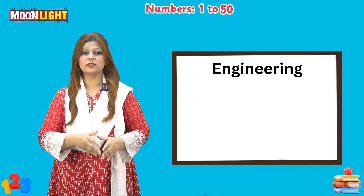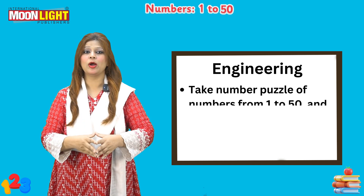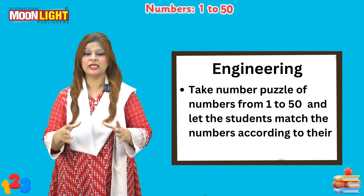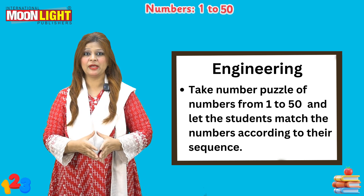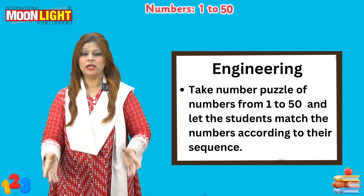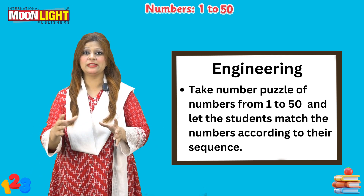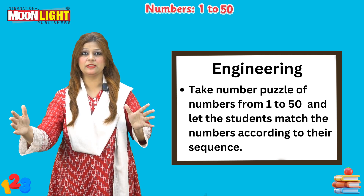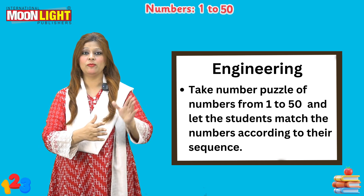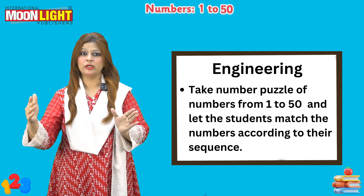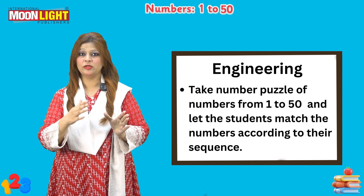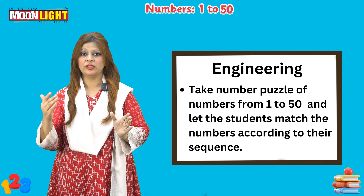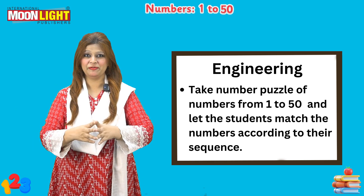For the engineering section, take number puzzles from 1 to 50 and let the students match the numbers according to their sequence. Lay them on the floor and the students are going to match them in sequence — for example, 1 to 10 in one row, 11 to 20 in the next, then 21 to 30, and so on up to number 50.